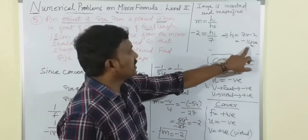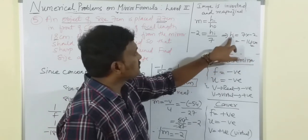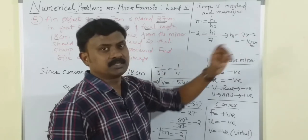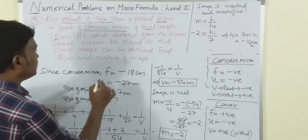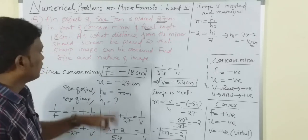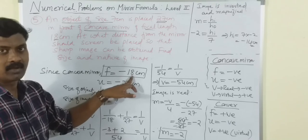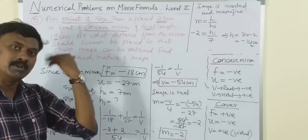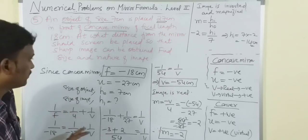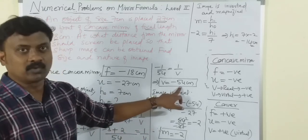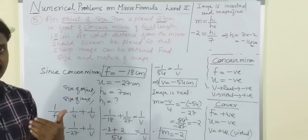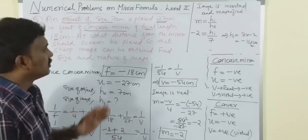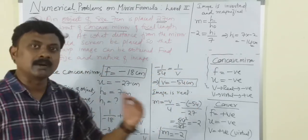The negative sign means the image is inverted, and the size is 14 centimeters, so it is magnified. Checking: f = -18 cm, so C is at 36 cm. The object was placed at 27 cm, which is between f and C. The image at v = -54 cm is beyond C (greater than 36 cm) - this matches the expected case perfectly.